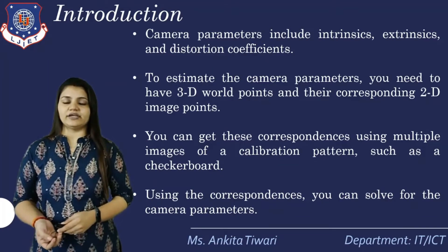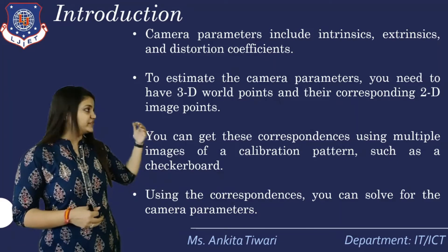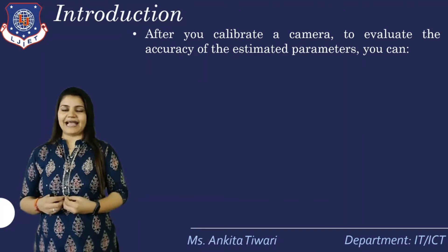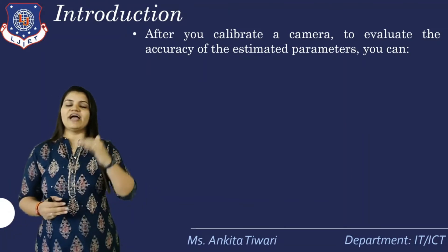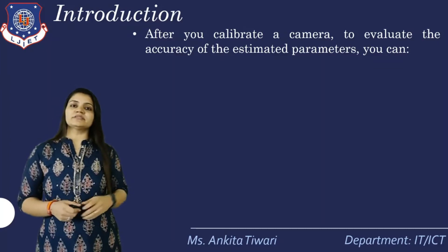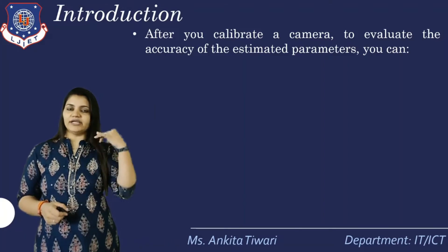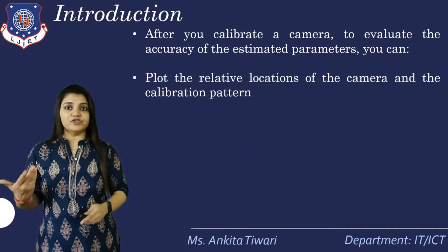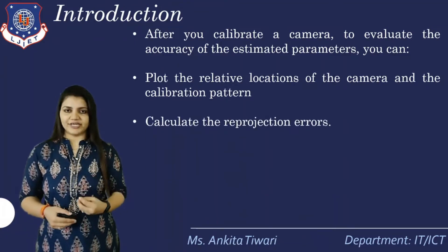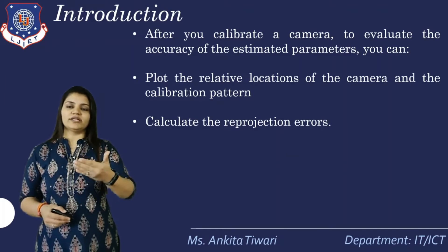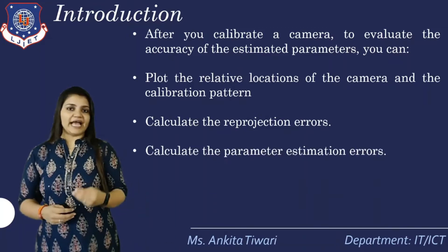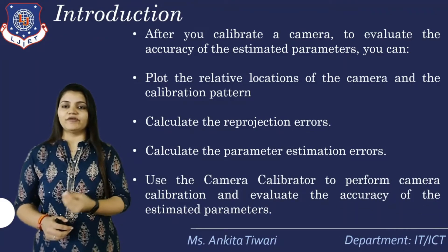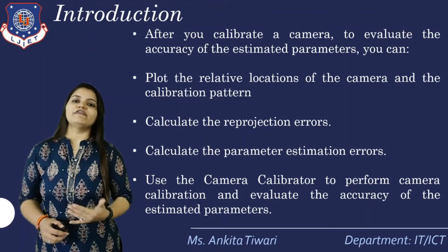Using the correspondences you have, you can solve for the camera parameters — extrinsic parameters, intrinsic parameters, and distortion coefficients. After you calibrate a camera, to evaluate the accuracy of the estimated parameters, you can plot the relative locations of the camera and the calibration pattern. You also calculate the reprojection errors, and calculate the parameter estimation errors, then use the camera calibrator to perform camera calibration and evaluate the accuracy of the estimated parameters.